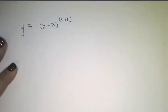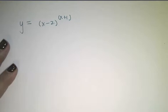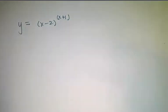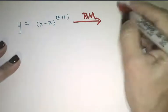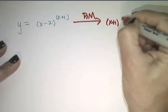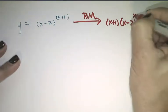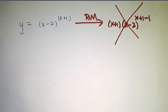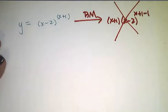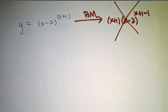Y equals (x-2) to the (x+1). What is our bad math? That is if we bring the exponent down and then subtract off 1. Bad math, and we don't like it.